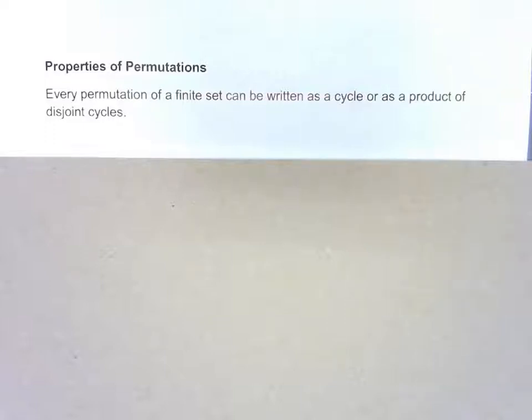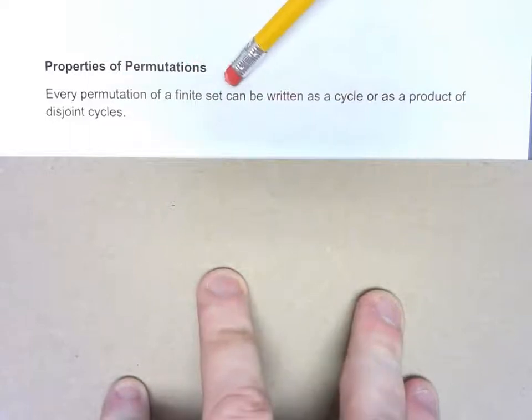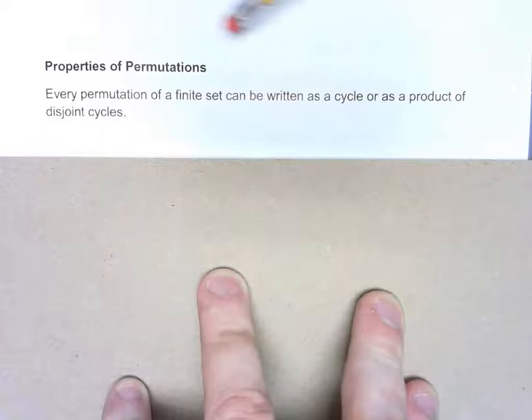Let's look at a few important properties of permutations. Some of these came up in previous videos, but they're so important that it's worth really being specific about them. The first one is that every permutation of a finite set can be written as a cycle or as a product of disjoint cycles.